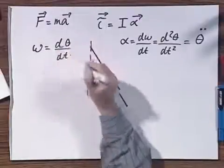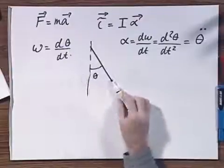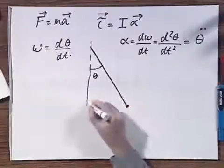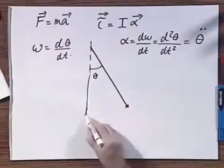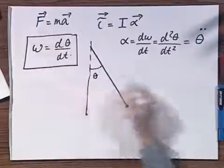d theta dt is zero when the pendulum reaches a maximum, and omega reaches a maximum when the pendulum goes through equilibrium. That is one way that we define omega.